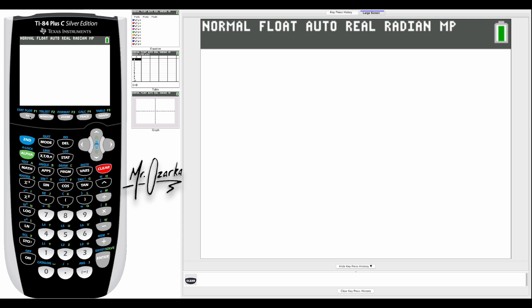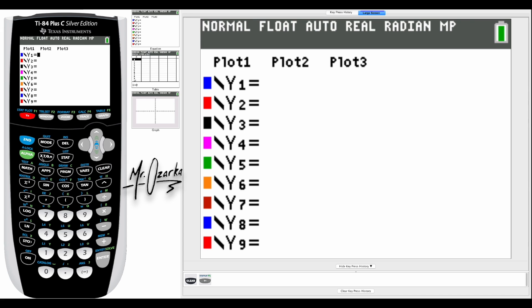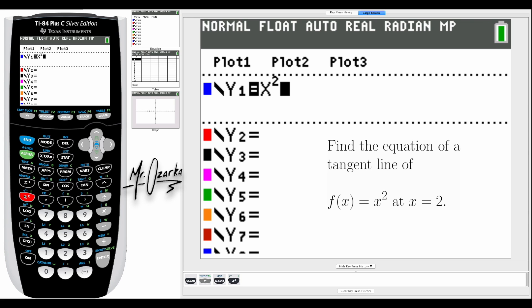The first thing you want to do is put the function in your y equals. Let's say it's x squared. We want to find the equation of a tangent line for x squared at x equals two.